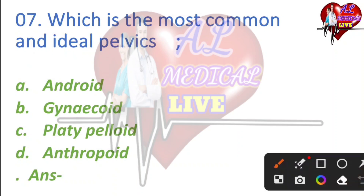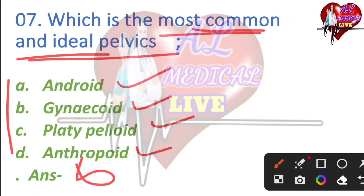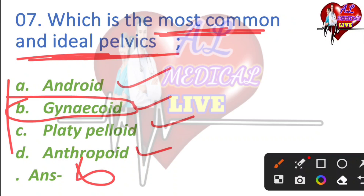Which is the most common and ideal pelvis? The options are: A) Android, B) Gynaecoid, C) Anthropoid, D) Platypelloid. The right answer is Gynaecoid — this is the most common and ideal pelvis.